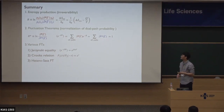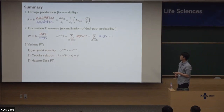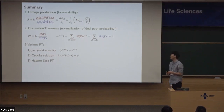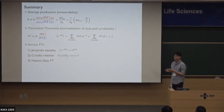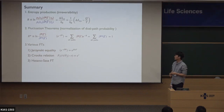In the second lecture, we learned how to define entropy production, which is a logarithmic ratio between time-forward and time-reverse path probability. And then we learned the fluctuation theorem — the average is equal to one. Since R equals total entropy production, it means that total entropy production satisfies the fluctuation theorem. From this, we can derive the thermodynamic second law. By choosing useful dual path probabilities, we can show various fluctuation theorems — the first was Jarzynski equality, and the second was Crooks relation.